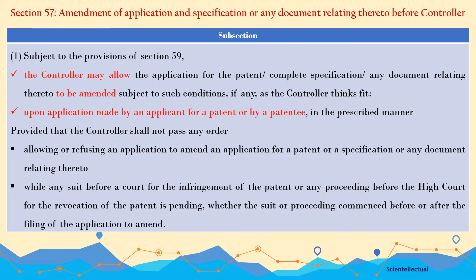Section 57: Amendment of Application and Specification or Any Document Relating Thereto Before Controller. Subsection 1: Subject to the provisions of Section 59, the Controller may allow the application for patent or complete specification or any document to amend if he thinks fit. In that case, the patentee — or in the case of before grant, the applicant — needs to apply in a prescribed manner to the Controller that he wishes to amend the application.